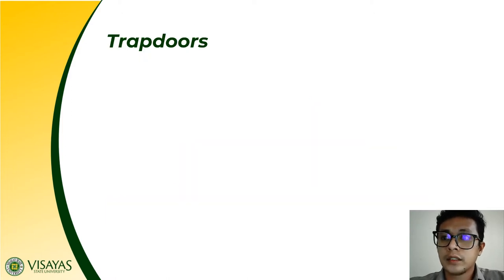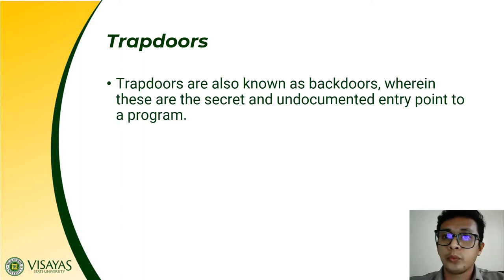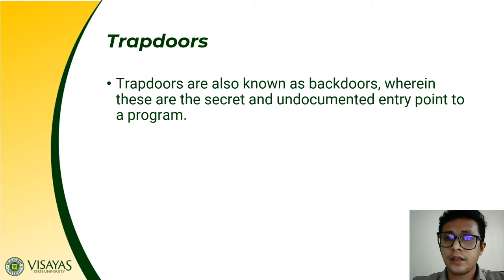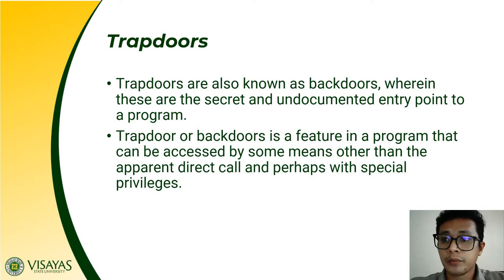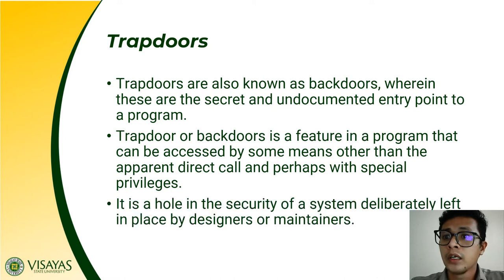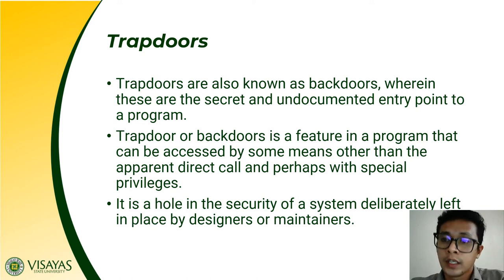Let us take these types of malicious software one by one. We start with trapdoors. Trapdoors are also known as backdoors — these are secret and undocumented entry points to a program. Usually, trapdoors or backdoors are only used during the creation and development of a program. Once a program is already deployed and used, this trapdoor or backdoor should be closed. A trapdoor is a feature in a program that can be accessed by some means other than the normal method, perhaps with special privileges, so you don't have to go through entering special credentials to gain access.